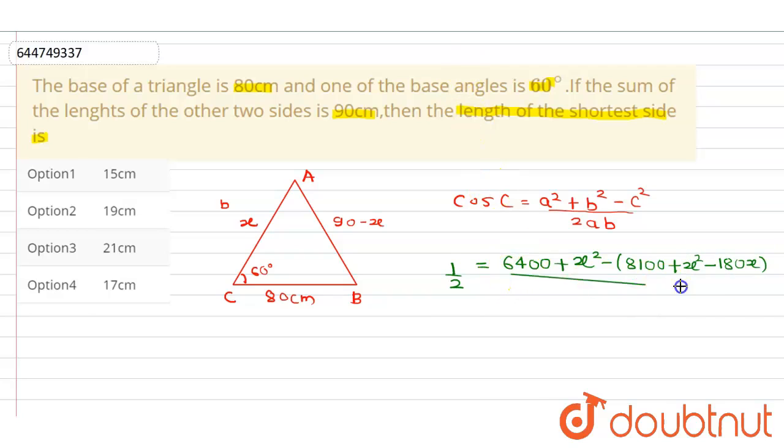Now this whole divided by, this whole divided by 2 into AB. Now this will be 2 into 80 into x. Now we can cancel this 2 from both sides.